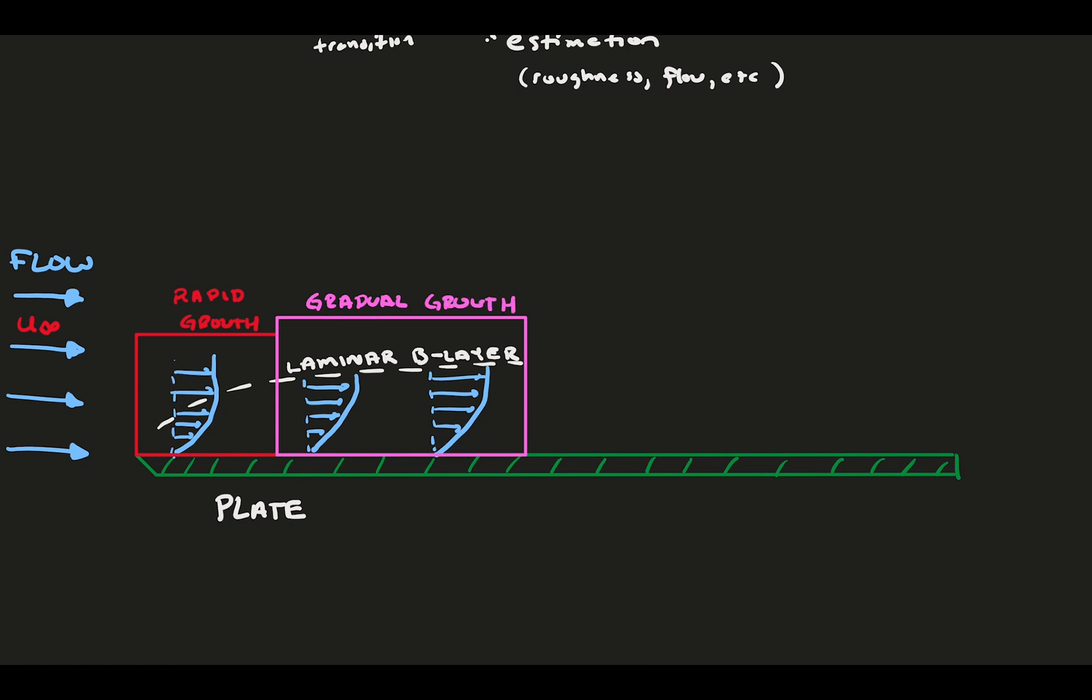Then is followed by a longer region of gradual growth where last time we did our laminar theoretical analysis. At some point, at the critical x location, the flow transitions to turbulence. We start to see a lot more unsteady flow structures, vortices, eddies, and chaos. Tracing the boundary layer height with the dashed white line shows us that at the point of transition, the boundary layer thickness jumps dramatically, then gradually continues its growth.